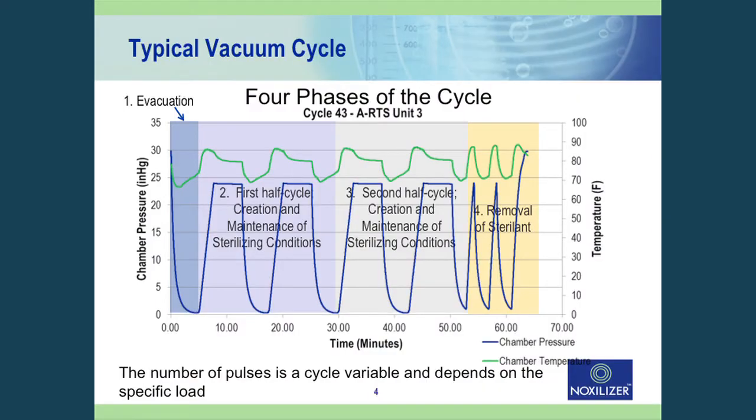For the sterility assurance level, we have a second half cycle and then an aeration phase at the end, which could be anywhere from three to six evacuation cycles. It depends on the amount of packaging and the complexity of the product, to ensure that the residual NO2 levels in the chamber are at a safe level for operators to open and start handling the product.